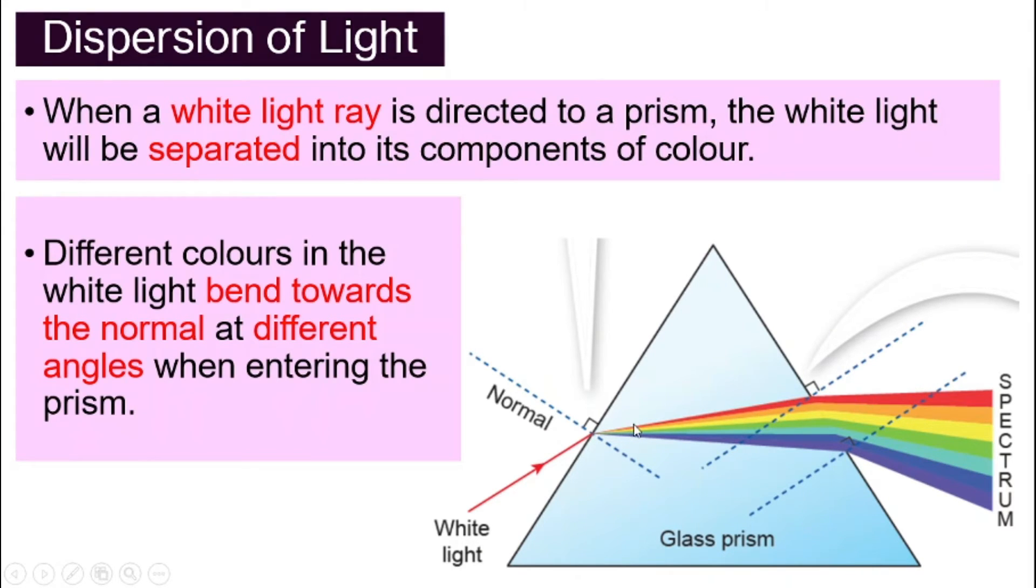And different color bands bend towards, meaning that they change direction because of refraction. They move closer to the normal line. But then they all move closer at a different angle, and hence they are being spread out.